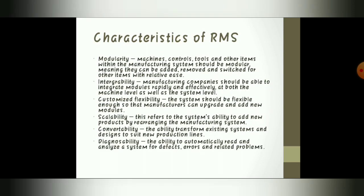Now, characteristics of RMS. First: Modularity. Machines, control tools, and other items within the manufacturing system should be modular, meaning they can be added, removed, and switched for other items with relative ease. Modularity means that in any manufacturing industry, the machines, controls, tools and other items should be modular — that is, we should be able to add or remove them in the future without any disturbance.